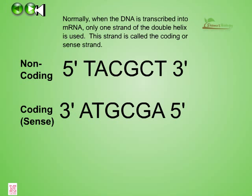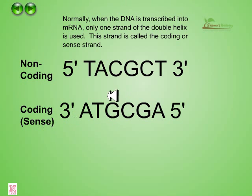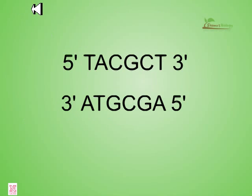Normally, when DNA is transcribed into mRNA, only one strand of the double helix is used. This strand is called the coding strand or the sense strand. The opposite strand is called the antisense strand or the non-coding strand.